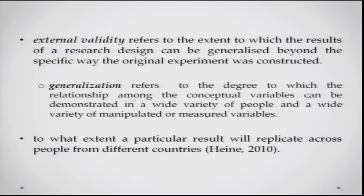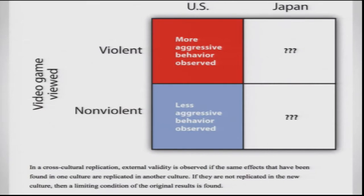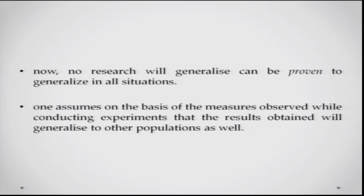To what extent will a particular result replicate across people from different countries? For example, a study was done examining what kind of video game viewership leads to what kind of behavior. It was found in the US that more aggressive behavior was observed in people who watched violent video games. You would want to test this in India, Japan, or China to see whether this kind of relationship holds. No research design can possibly be proven to generalize in all situations — you have to make that inference based on how well you have controlled all the other variables and important factors in the study.